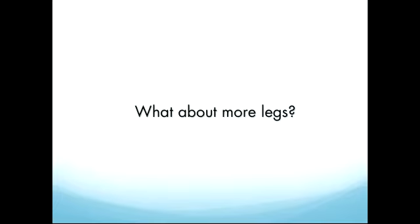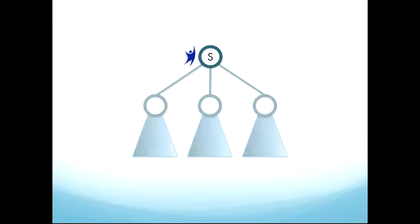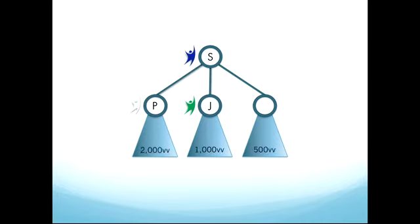Now, let's look at what happens when we add in other legs. Let's say this person is a Sapphire, and for simplicity, let's just pretend that they have three legs. One of these legs is a Pearl, one leg is a Jade, and the third leg consists of just brand partners. In the Pearl leg, let's say there's 2,000 VV. In the Jade leg, there's 1,000, and in the third leg, let's say there's 500 VV.